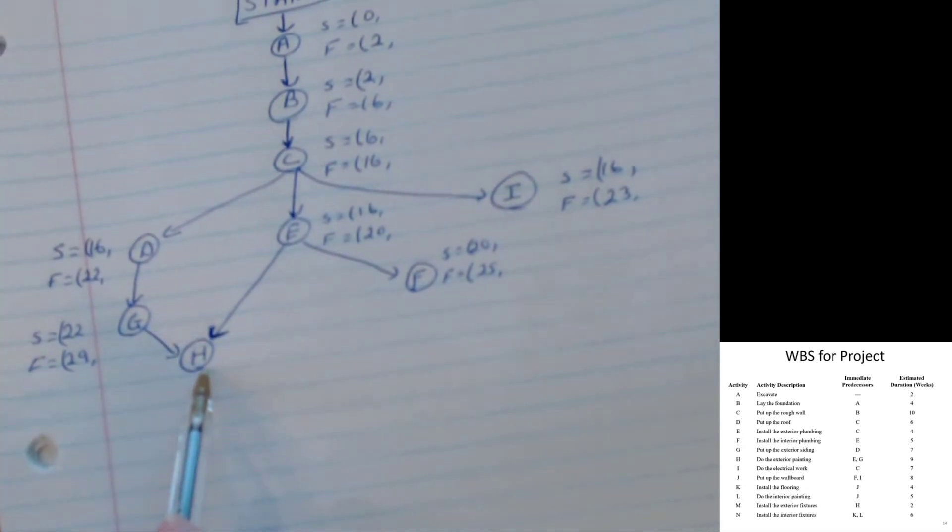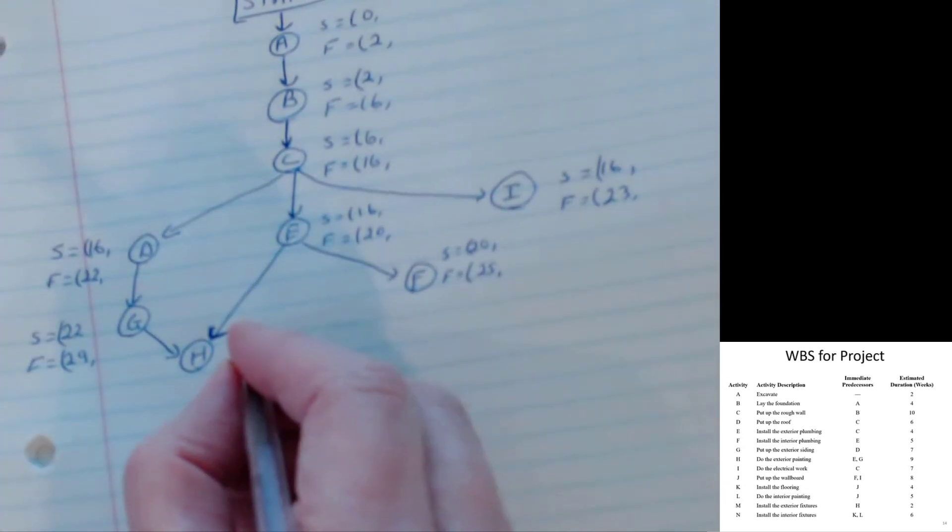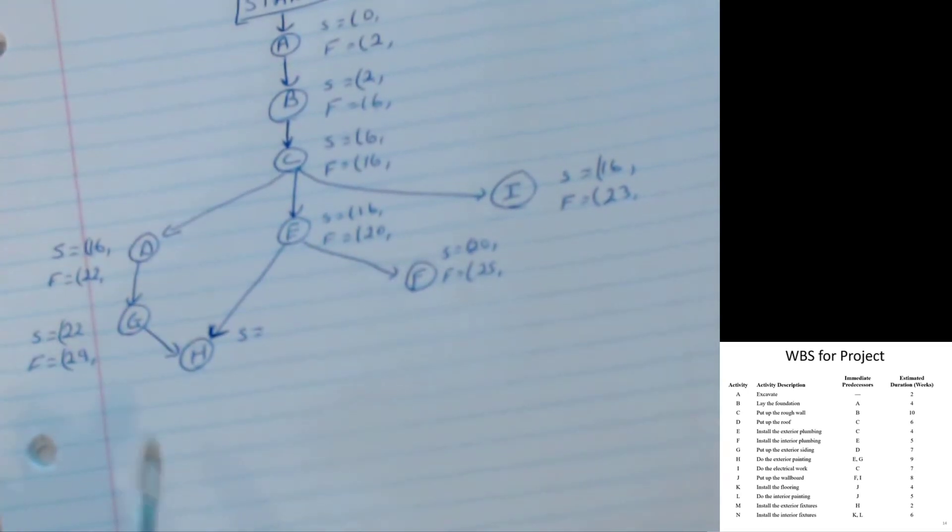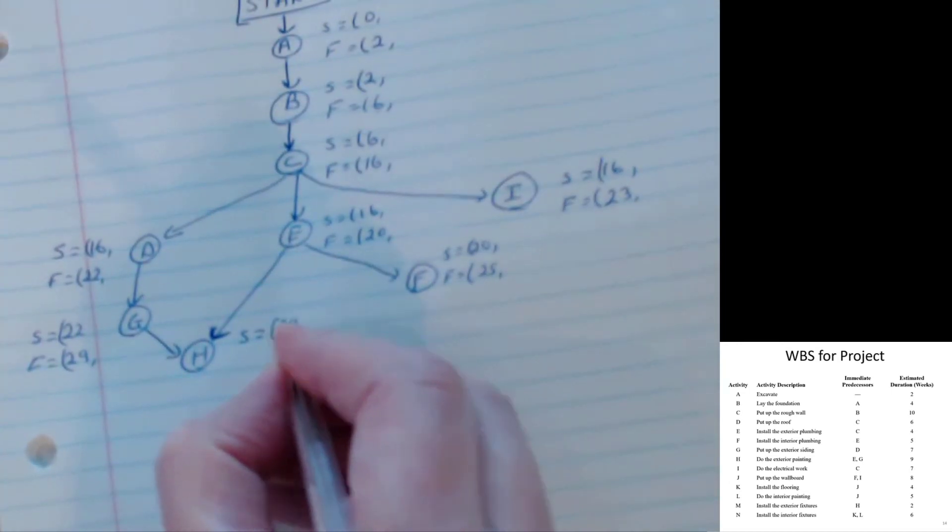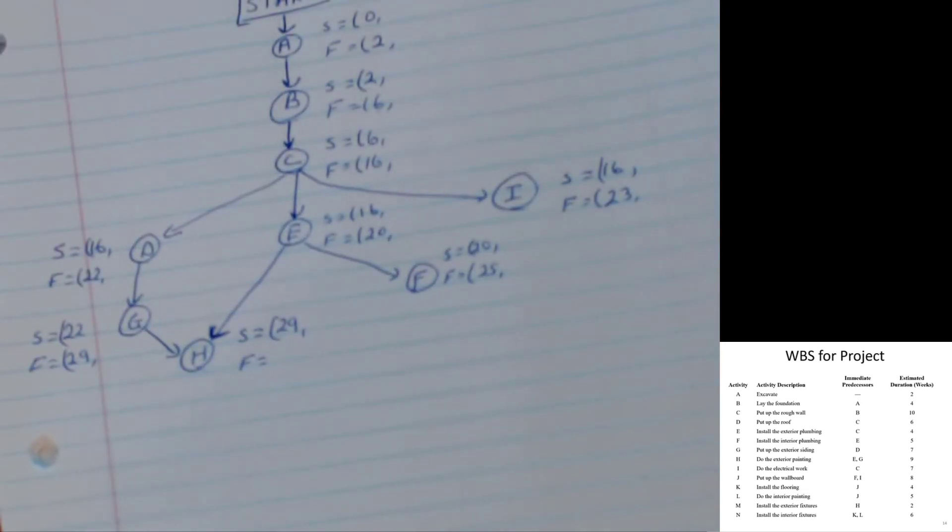When I look and see when can H begin, start time for H, it needs G and E to both be done. So although E is done in period twenty, G is not finished until period twenty-nine. H cannot begin until period twenty-nine. Finishing time for H takes nine weeks. So twenty-nine plus nine, we get thirty-eight. And we've got H there.